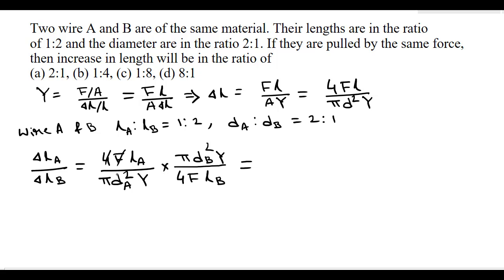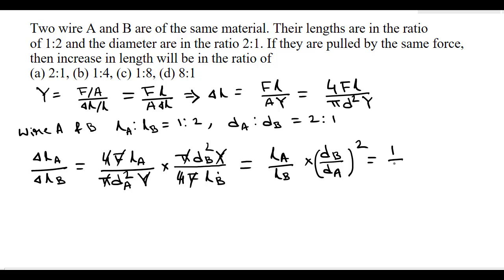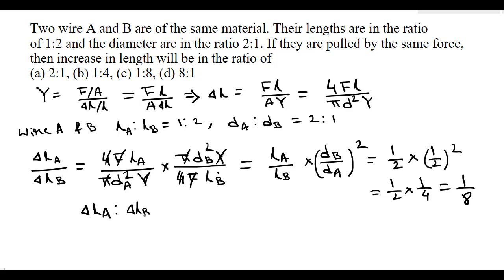Now 4, F, π, and Y cancel from both sides. So the ratio is equal to (L_A / L_B) multiplied by (D_B² / D_A²). We know L_A/L_B = 1/2 and D_A/D_B = 2:1, so D_B/D_A = 1/2. Therefore the ratio is (1/2) × (1/2)² = (1/2) × (1/4) = 1/8. So delta L_A to delta L_B equals 1:8, and option C is the correct answer.